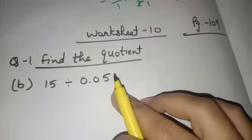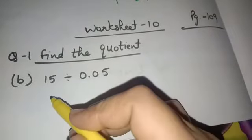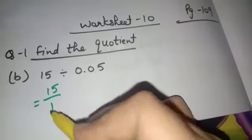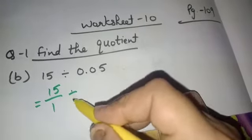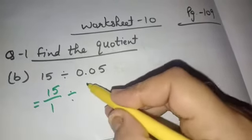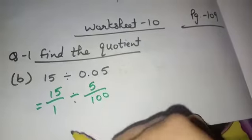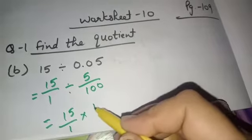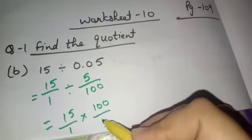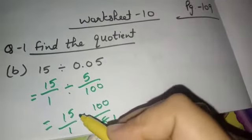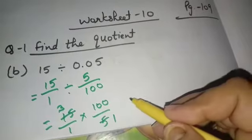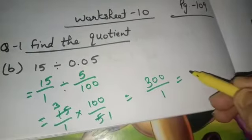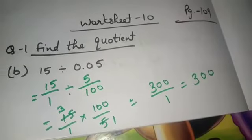B part is 15 divides 0.05. 15 can be written as 15 by 1 divides, here when we remove the point it will be 5 by 100. Division sign will be converted to multiplication 100 by 5. Cancel 5. 3 multiply 100, it's 300 by 1. The answer is 300.